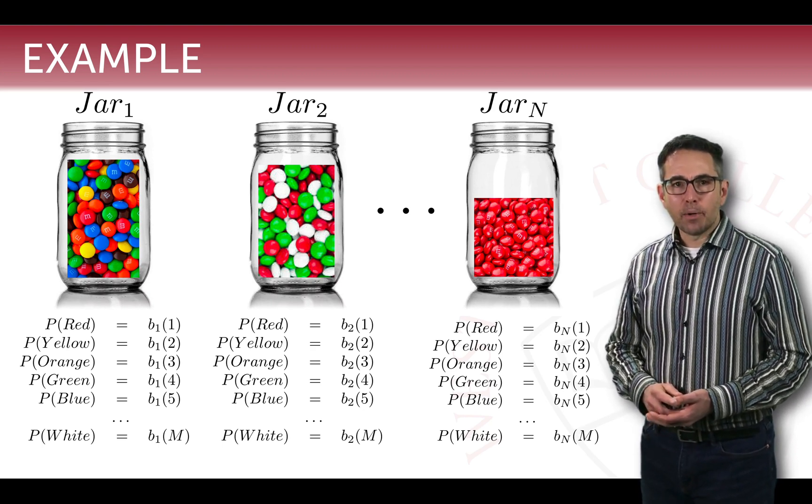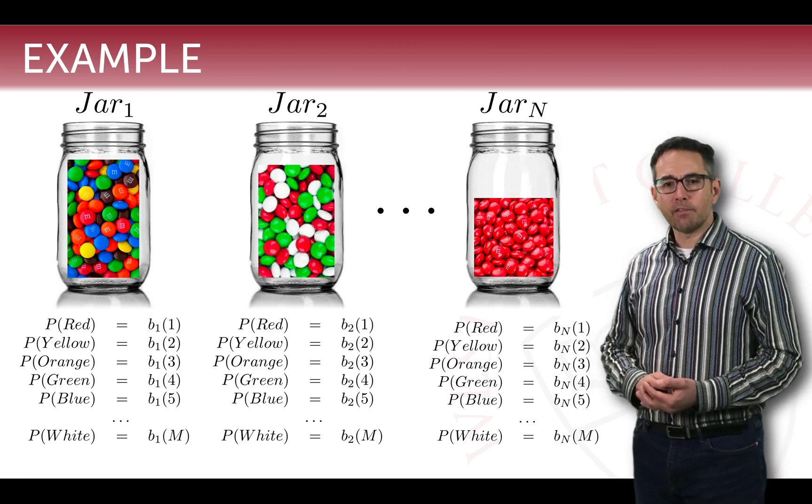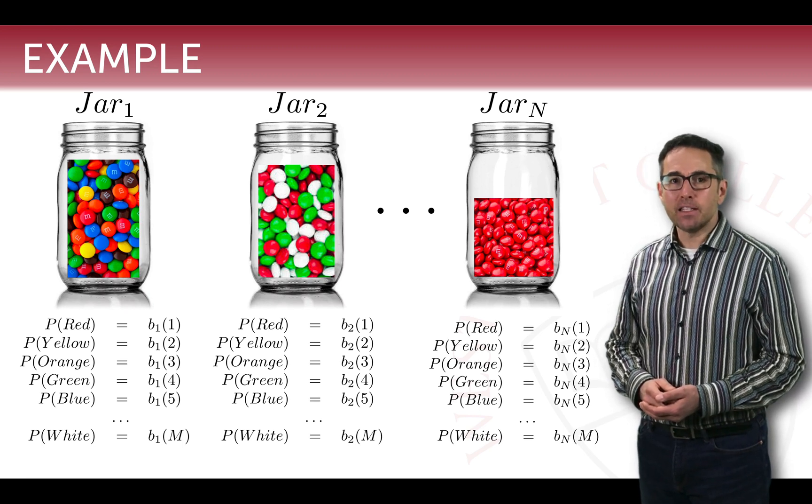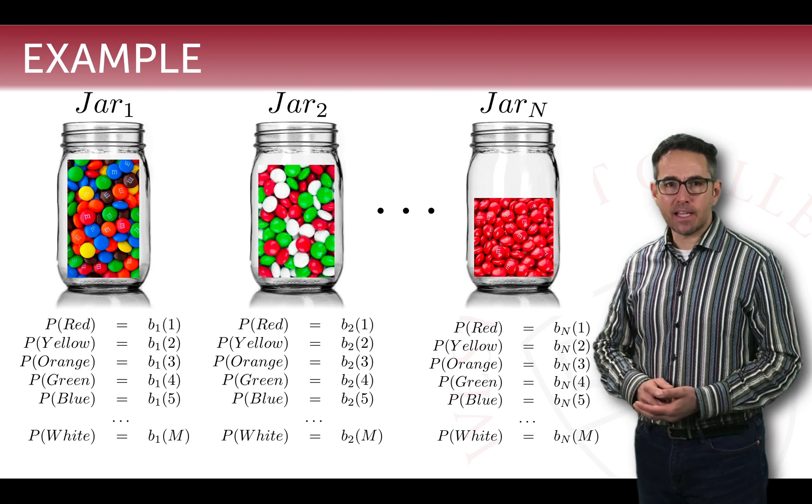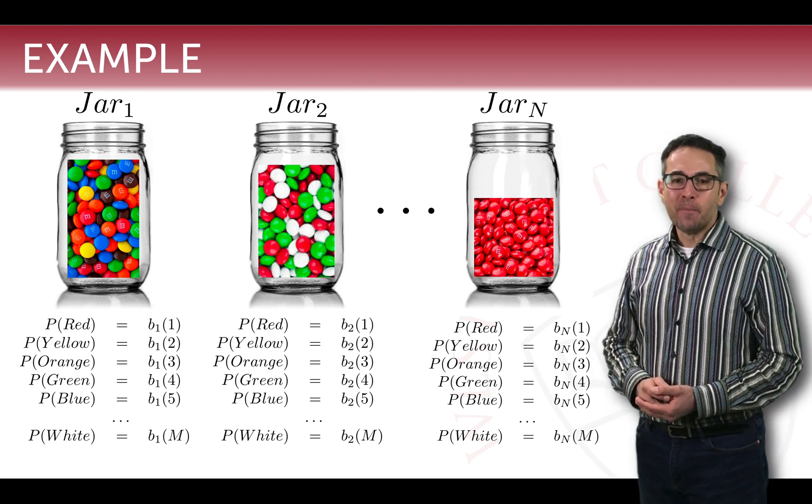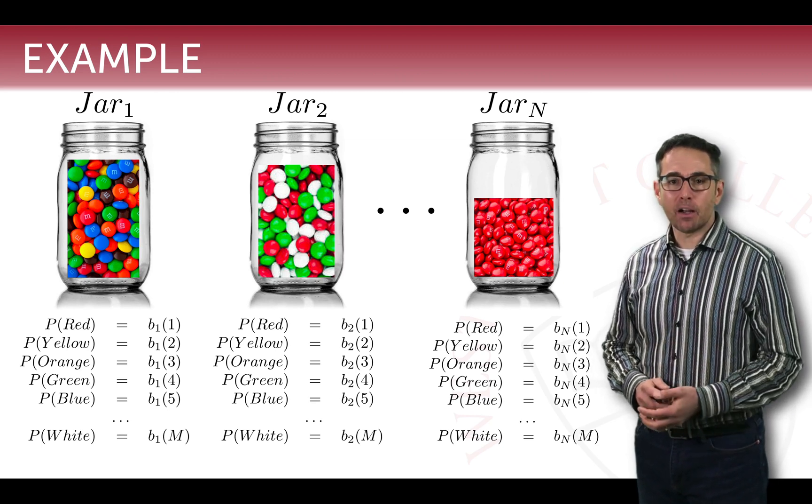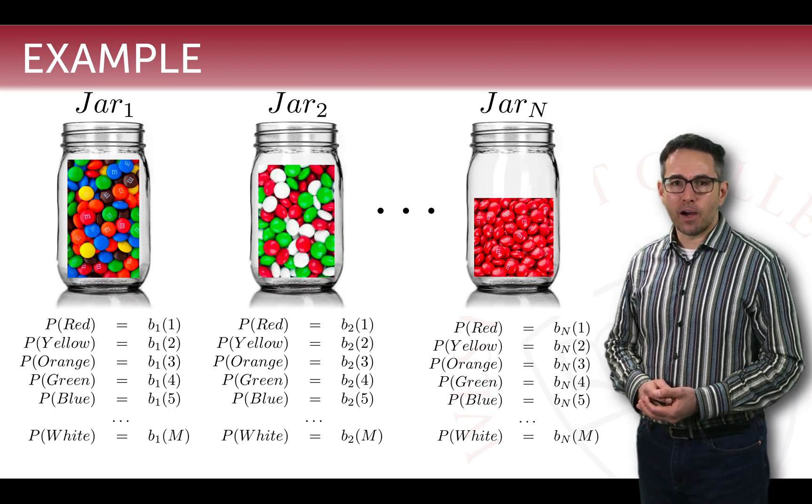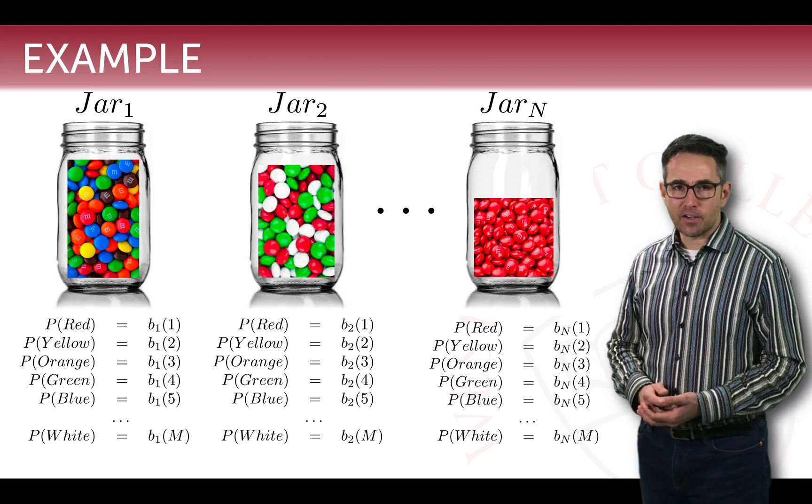So the way we're going to play our probability game here, the way in which we're going to motivate our hidden Markov model, is we're going to say that we have M different colors of M&Ms. You can see at the bottom row, in this case, white is the Mth color. And we're going to draw one M&M at a time on our beats, just like a Markov model. And we're going to choose which jar we're going to draw from based on the previous jar that we drew from. And that will give us a sequence of observations.